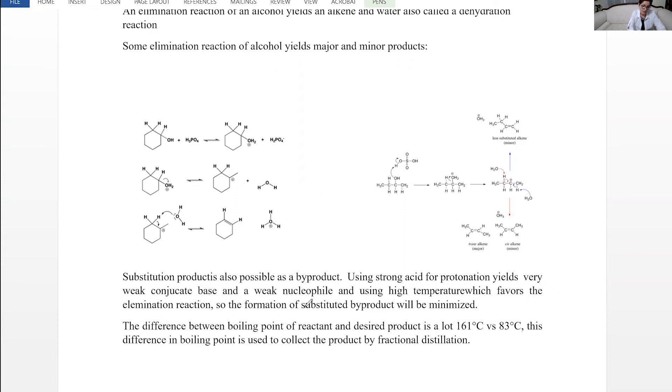The two factors helping us not to get substitution product is using a strong acid for protonation. This strong acid yields very weak conjugate base which is a very weak nucleophile. If you have a weak nucleophile, the chance for substitution reaction is lowered. Also using high temperature is going to favor elimination. So we hope that we get only elimination product.